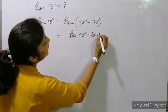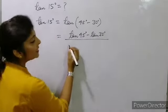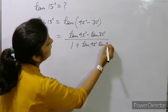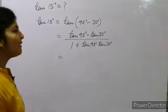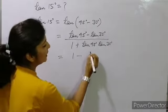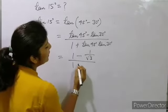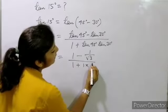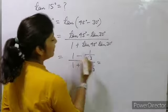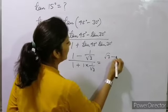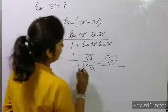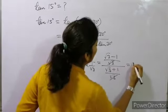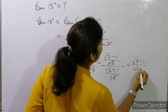Here x = 45° and y = 30°. So it is (tan 45° − tan 30°) / (1 + tan 45° · tan 30°). The value of tan 45° is 1 and tan 30° is 1/√3. Substituting, the numerator becomes (1 − 1/√3) = (√3 − 1)/√3, and the denominator becomes (1 + 1/√3) = (√3 + 1)/√3. So it simplifies to (√3 − 1) / (√3 + 1).